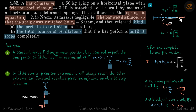Energy will be lost due to friction and the block will perform smaller and smaller SHMs until it stops. In the first part we find the period of oscillation, and in the second part the total number of oscillations until it stops completely.